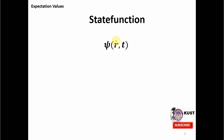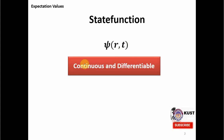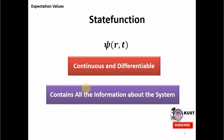We start with the state function. It is usually represented by the symbol psi, and in the brackets you see that it depends upon the position represented by R, and time represented by T. This state function has to satisfy two mathematical properties: it has to be continuous and differentiable. If this function does not satisfy these two properties, it will not be possible to extract any valuable dynamics out of it. Another requirement is that it should contain all the information about the system, which we can extract using different kinds of mathematical operators.